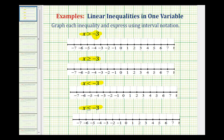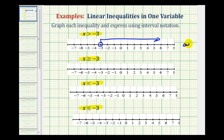For x is greater than negative three, because negative three is not in this interval, we make an open point on negative three, and then numbers get larger to the right, so we draw an arrow to the right. This would be the graph of x is greater than negative three. The open circle indicates that negative three is not in this interval. As we move to the right on the number line, we would be approaching positive infinity.